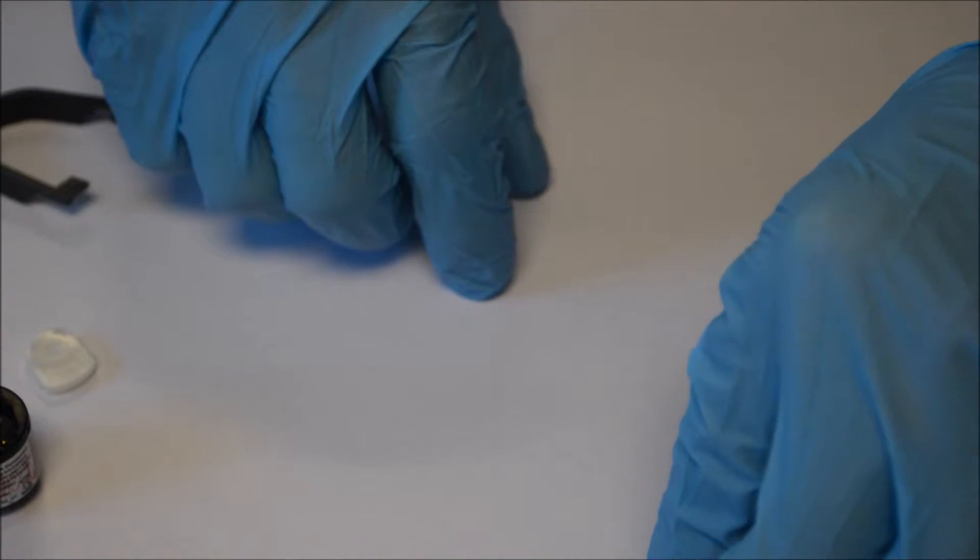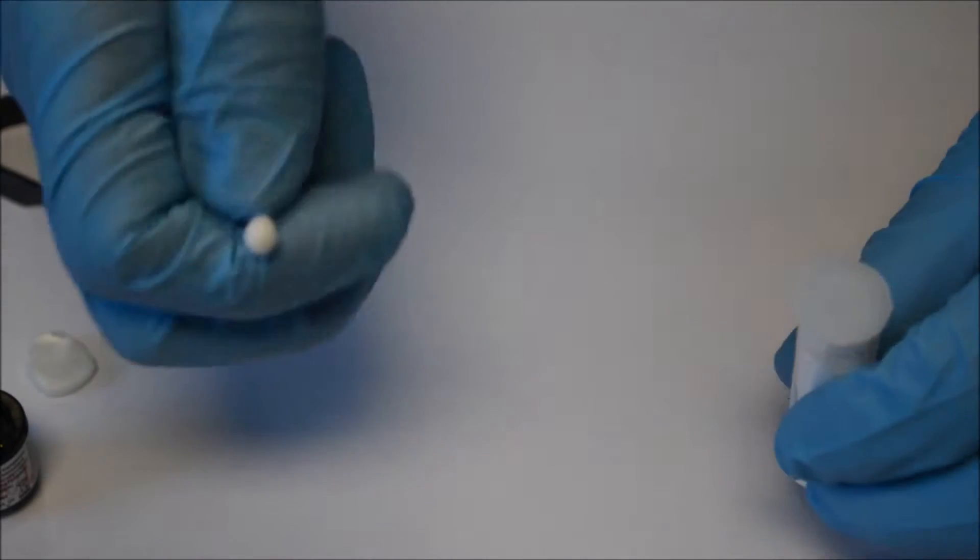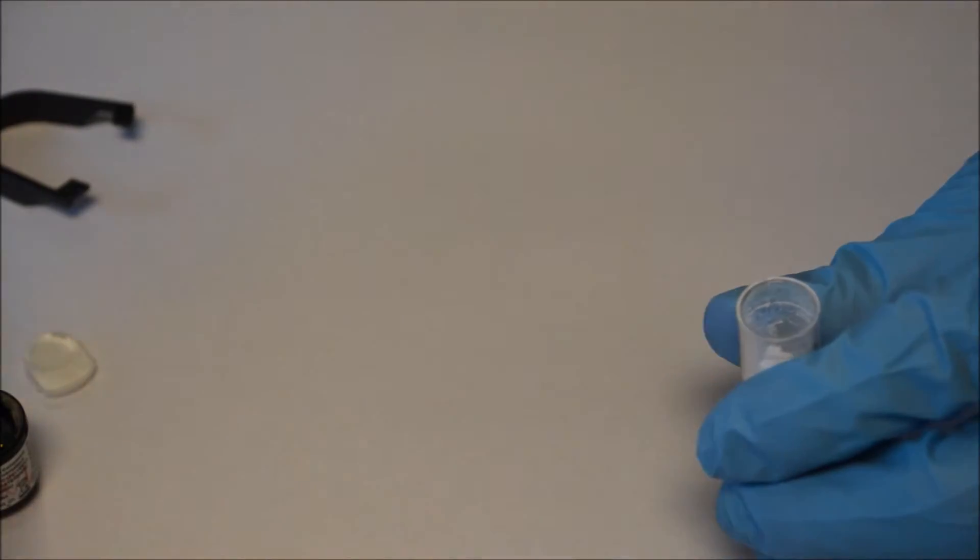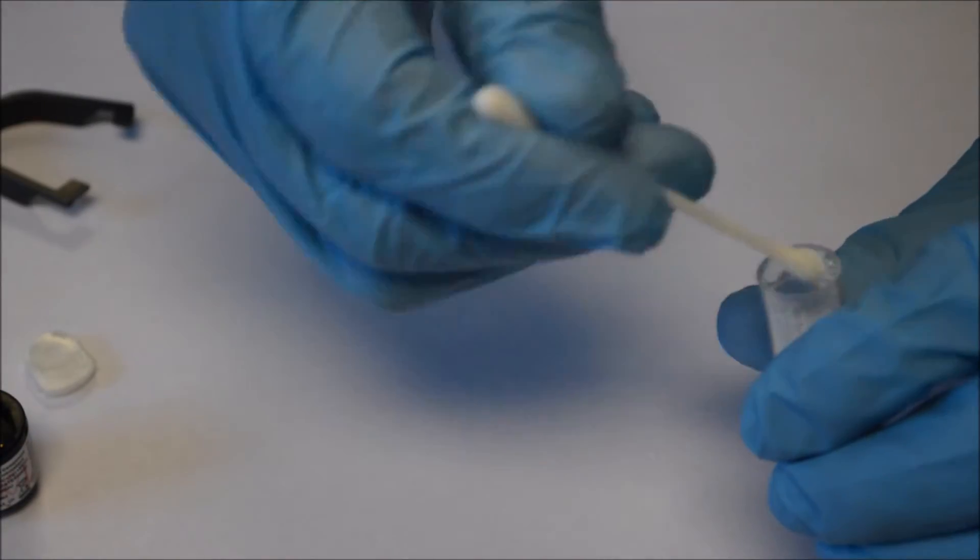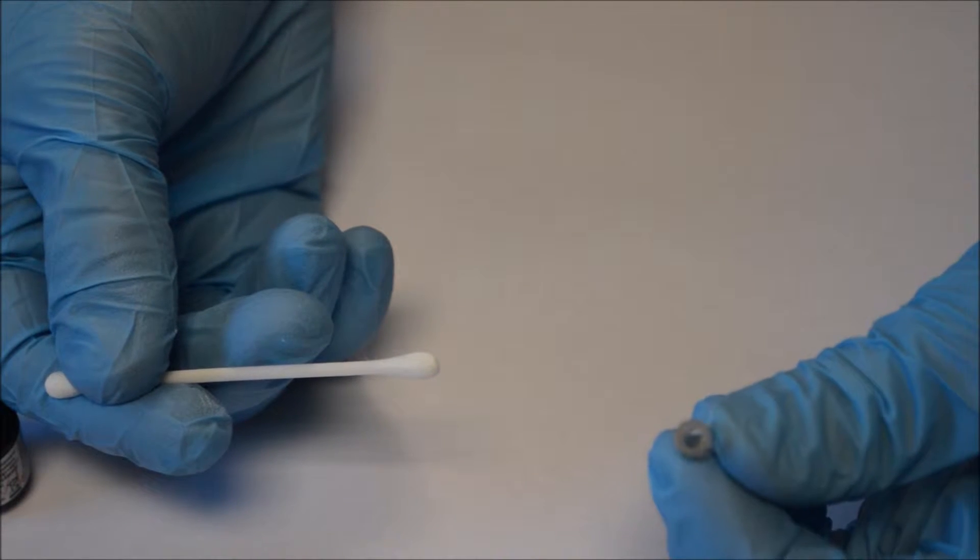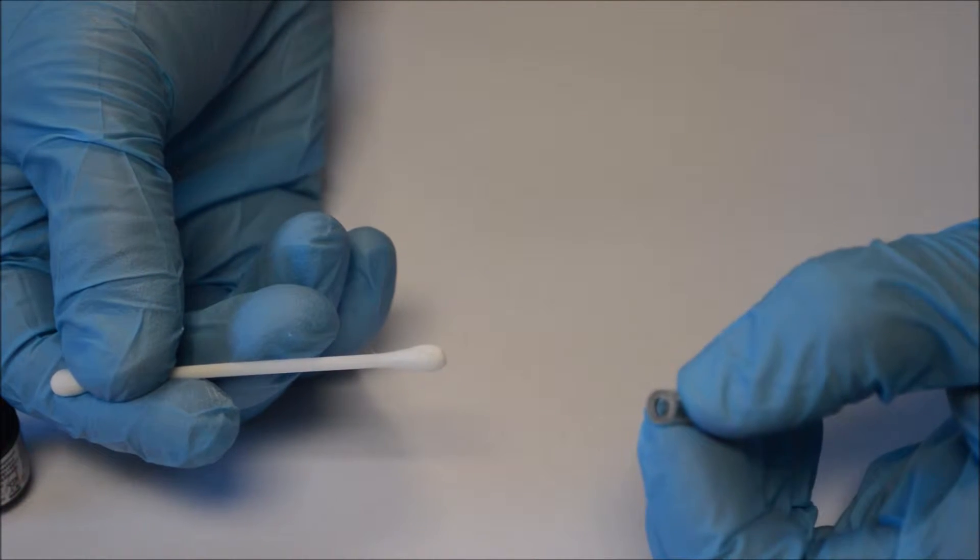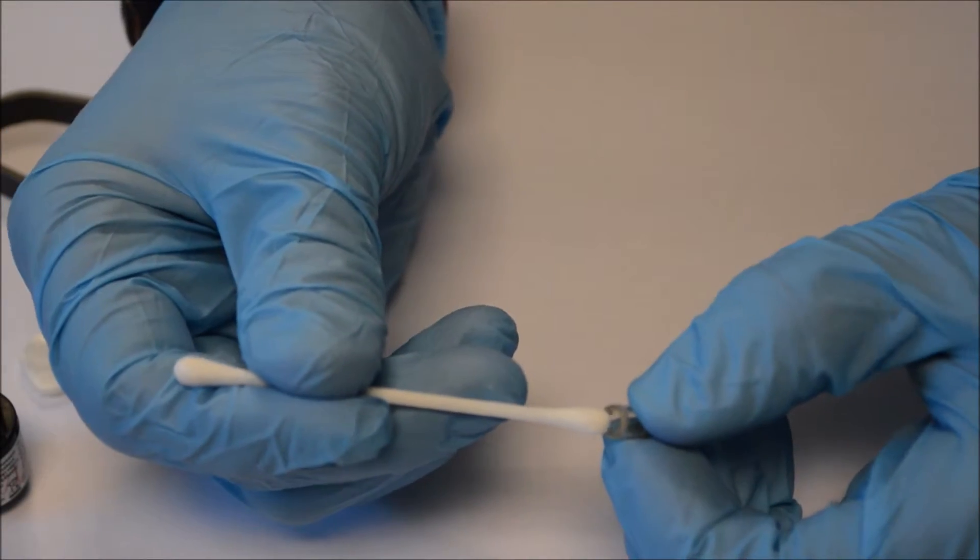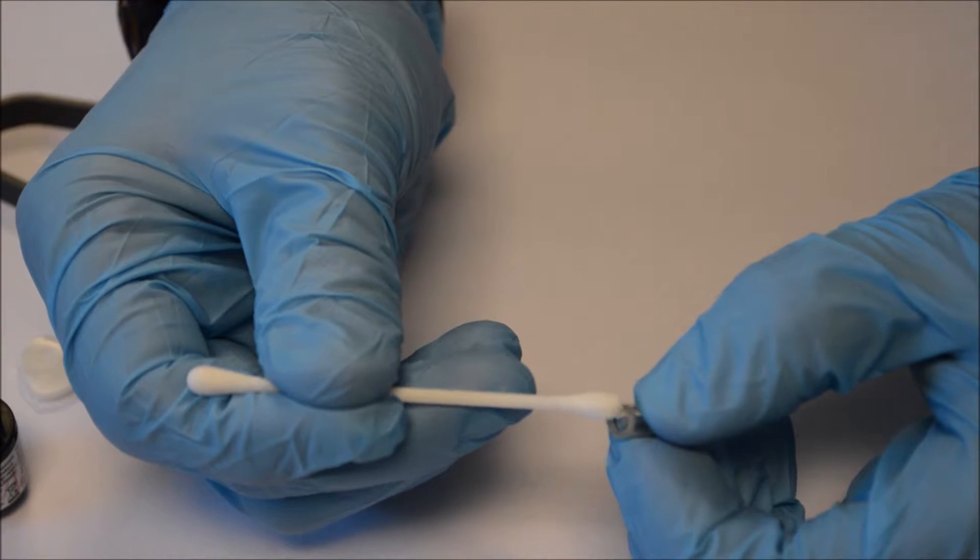Taking a clean cotton bud and your aluminium oxide you put a small amount on the tip of the cotton bud and holding the glass lamp, you'll notice I'm wearing gloves because you can't touch the lamp surface with bare hands, you gently in a circular motion clean the lamp head.